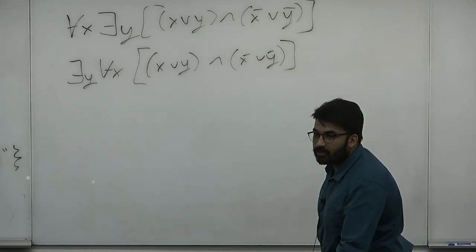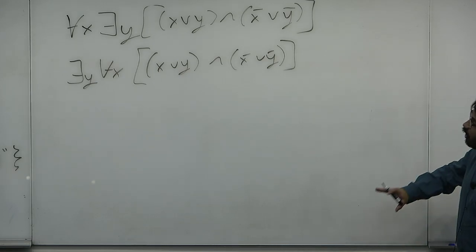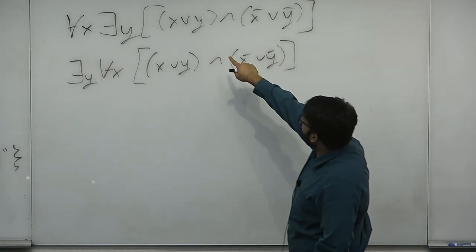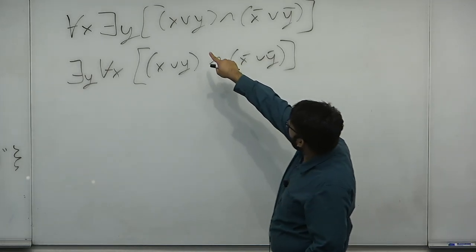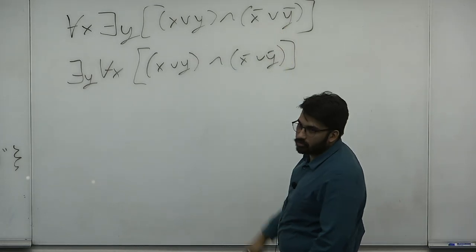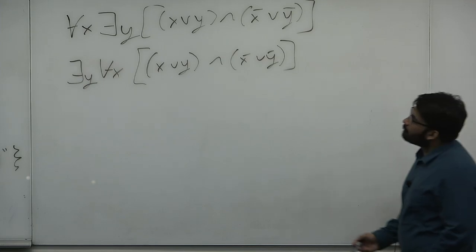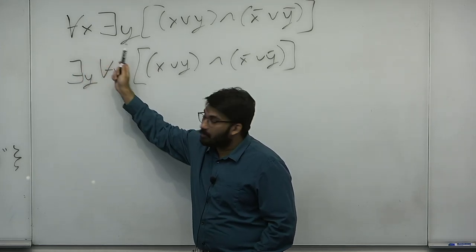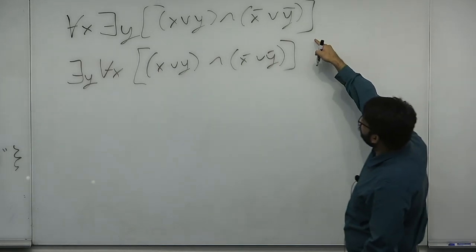Let's determine if those formulas are true. The first — for all X, exists Y — says: for every X, there is a Y. If X is 0, choose Y to be 1; if X is 1, choose Y to be 0. For every X, you can always choose a Y. So this formula is true and is an element of TQBF.